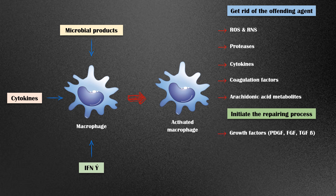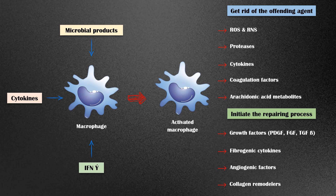To initiate the repairing process, they secrete growth factors such as platelet-derived growth factor, fibroblast growth factor, and transforming growth factor beta, fibrogenic cytokines which stimulate fibrosis, angiogenic factors which cause angiogenesis, and collagen remodelers.